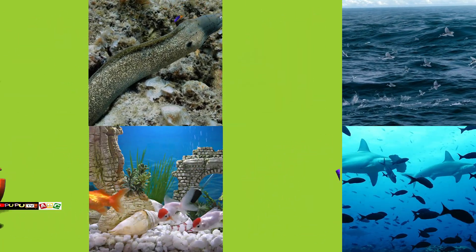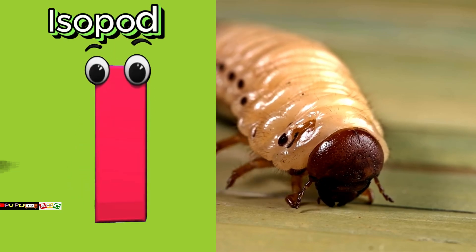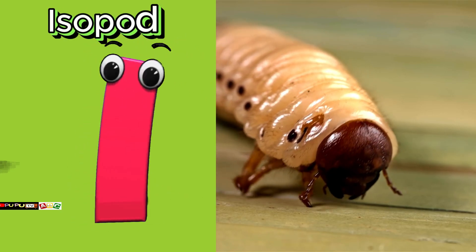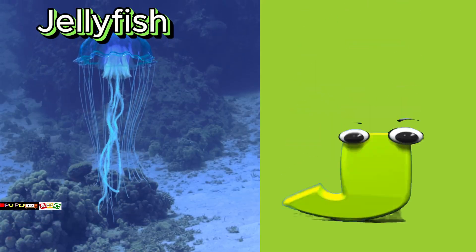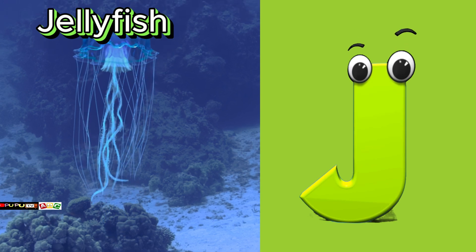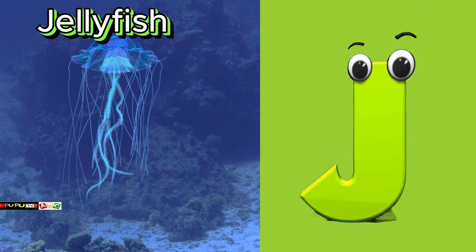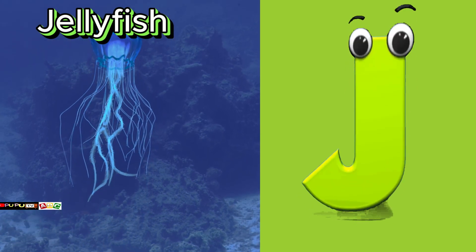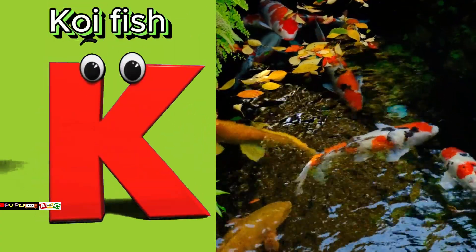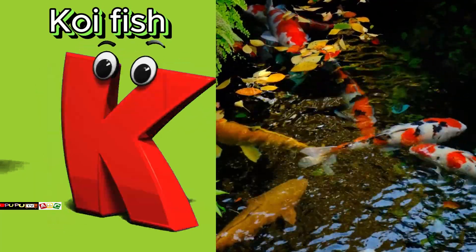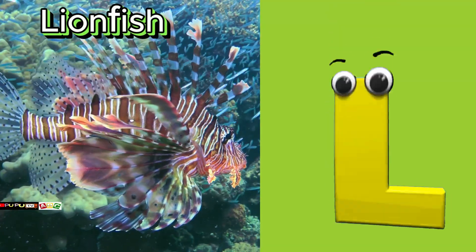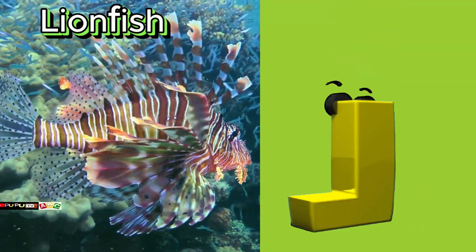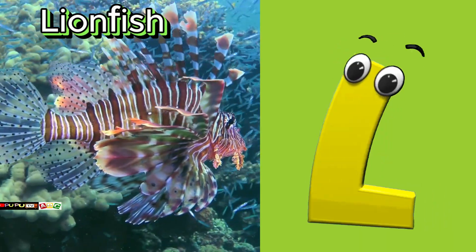I is for isopod. Eh, eh, isopod. J is for jellyfish. Juh, juh, jellyfish. K is for koi fish. Cuh, cuh, koi fish. L is for lionfish. Luh, luh, lionfish.